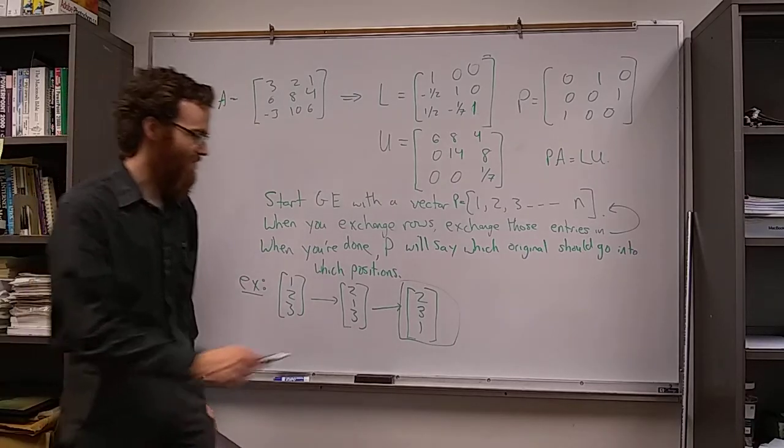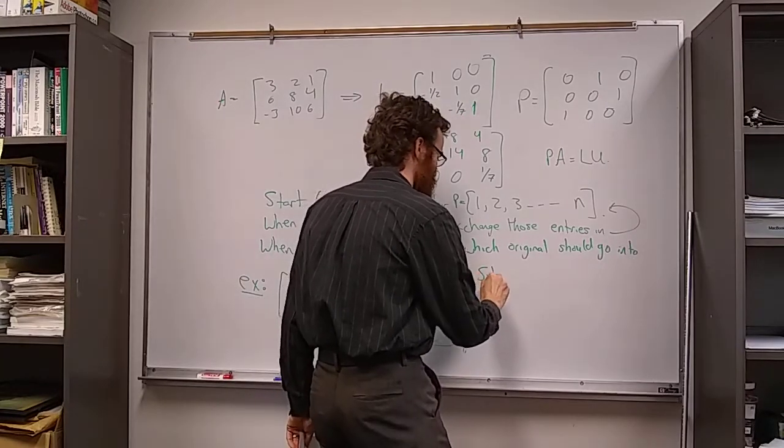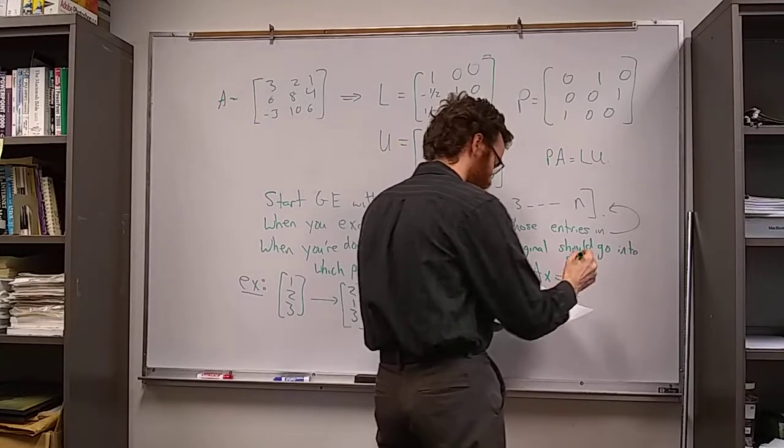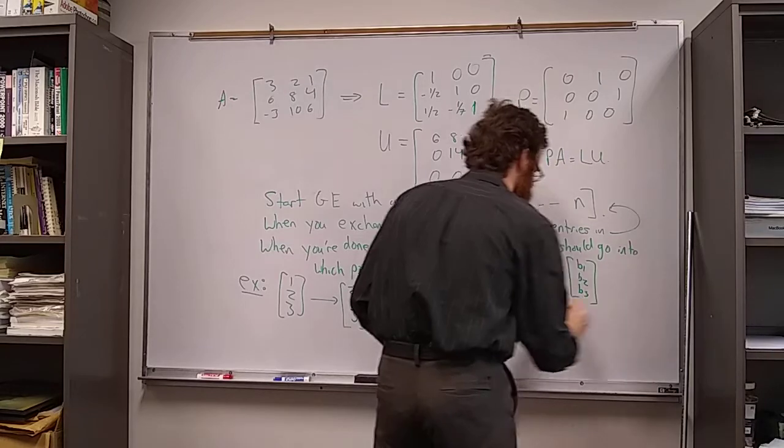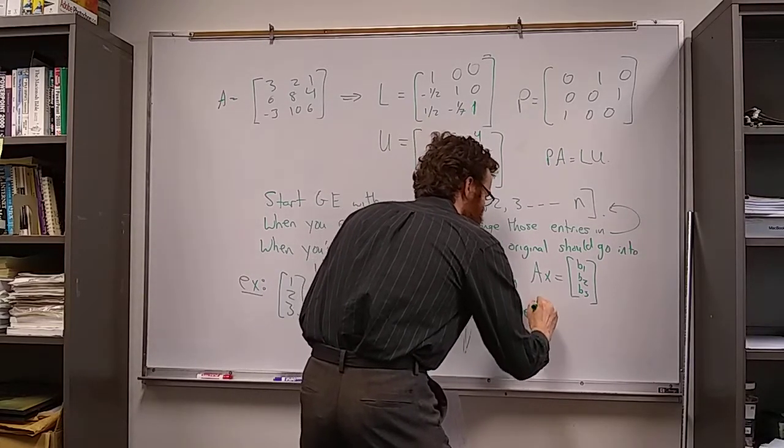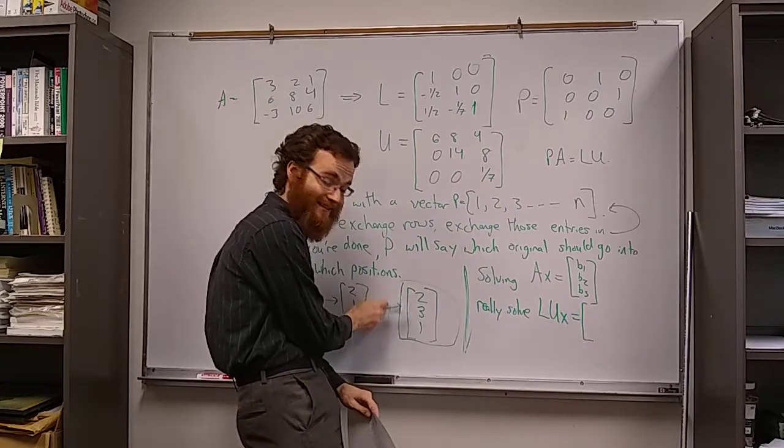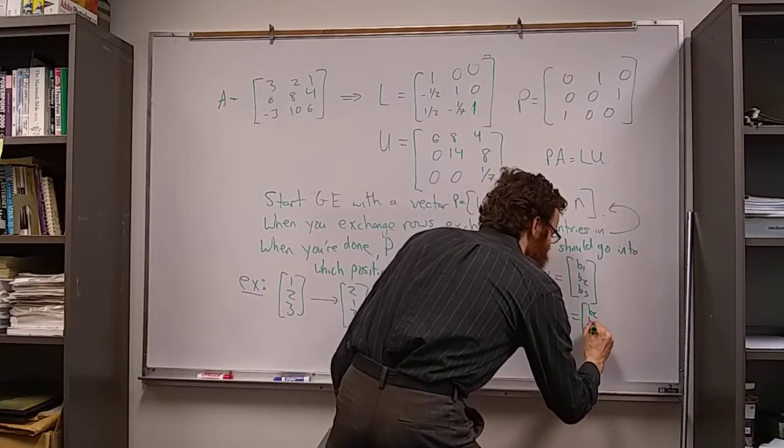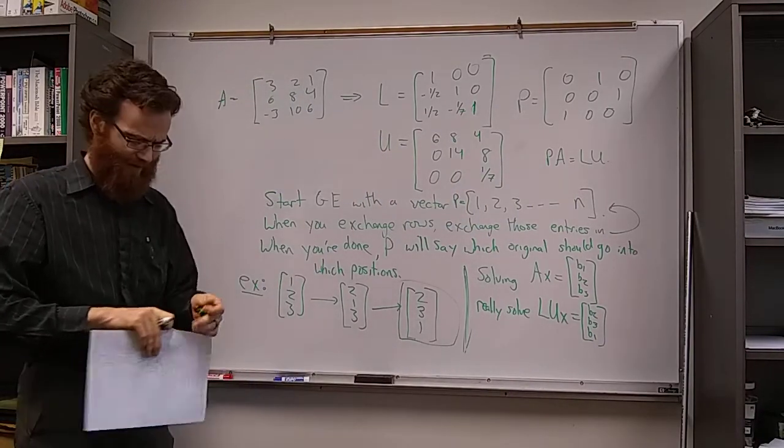So if this was your vector P, if we were solving AX equals B and say B was B1, B2, B3, what we're going to do is we're going to really solve LUX equals—and then we want to put them in the same order we used here—so B2, B3, B1. And there will be a homework problem about this.